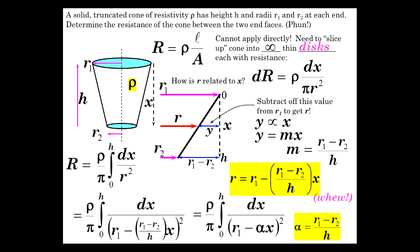And alpha is r1 minus r2 over h. So here's our result so far again where we substitute for alpha.